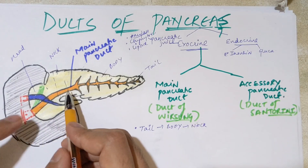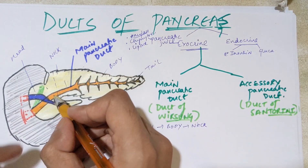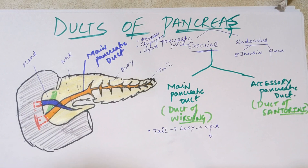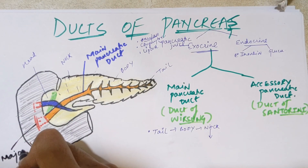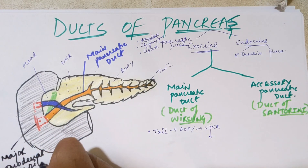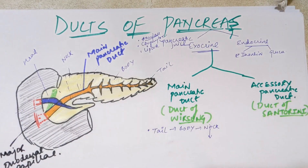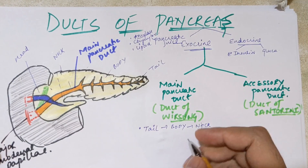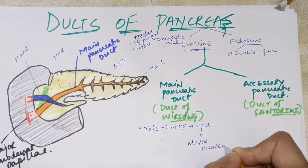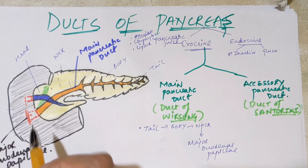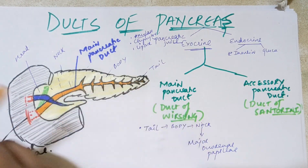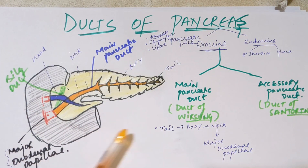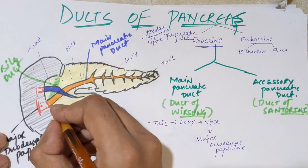When the main pancreatic duct goes inside the head, it takes a downward turn and then pierces into the duodenum. The duodenum has two papillas — major and minor. The main pancreatic duct drains into the major duodenal papilla. Before draining, it joins the bile duct coming from the right side, and together they form an ampulla.